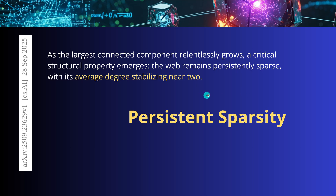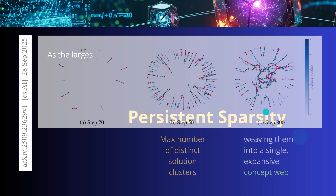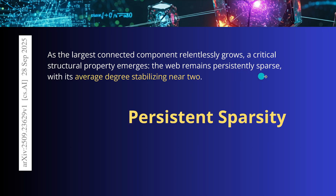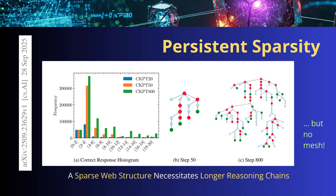It is absolutely important to understand the persistent sparsity of our network. The concept web remains persistently sparse, and absolutely surprisingly, with an average degree stabilizing near two. Think about this: our sparse web structure means that when we build the reasoning chain, we need longer reasoning chains. It is not an interconnected mesh connecting everything with everything. Because of this limited degree, we have to go with a tree-like structure. This is a fascinating insight into the current reasoning procedures of our AI systems.